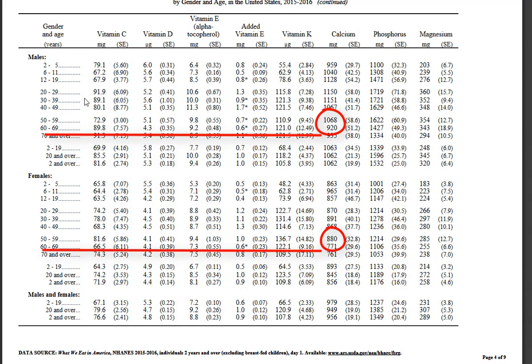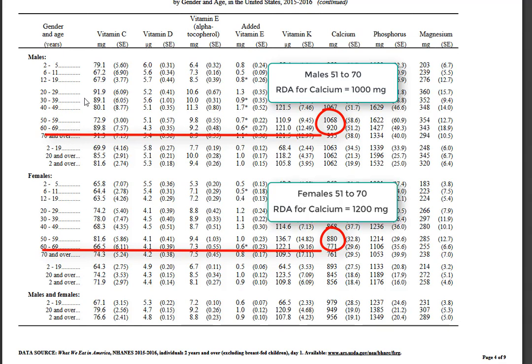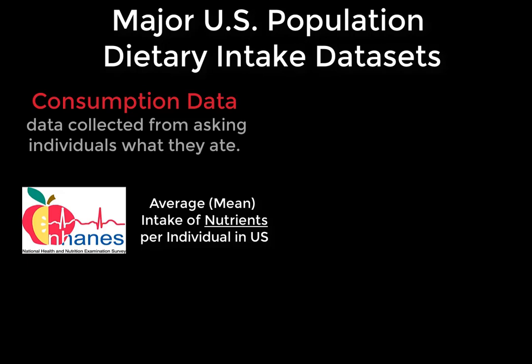This lower intake for females takes on more significance when we compare them to the respective RDAs, because just knowing an average intake isn't helpful if we don't know what the recommended need is. For males between 51 and 70, their RDA is 1,000 milligrams — they are not too far off. For females 51 to 70, their RDA is 1,200 milligrams, so their average intake is not only lower but significantly below their recommended intake level. In summary, NHANES data are consumption data — information gathered by asking people what they eat — providing mean intakes of nutrients per individual by specific group in the United States.